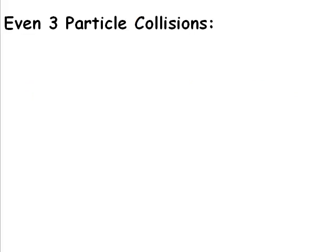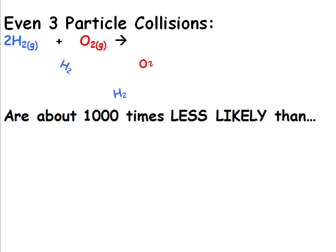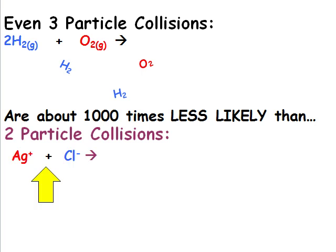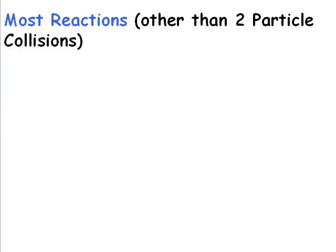Even 3 particle collisions, like the collision of 2 hydrogen molecules with 1 oxygen molecule, are about 1000 times less likely than 2 particle collisions, like a silver ion colliding with a chloride ion to form silver chloride.